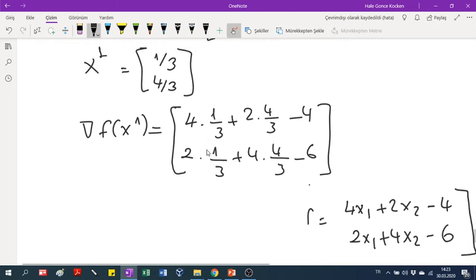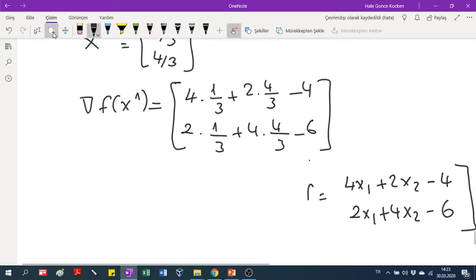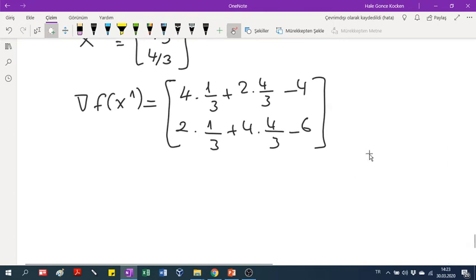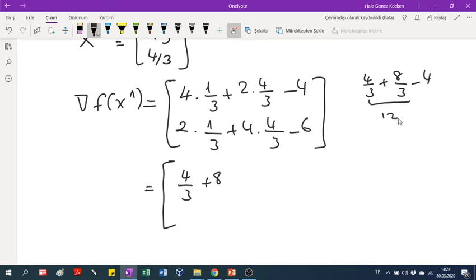It was 1/3 for the first component. Let me erase this part, and my next calculation. 4/3. Let me write here: 4/3 plus 8/3 minus 4. This is 12/3, which means that the first component is 0 for the gradient. It's really nice. It is 0.